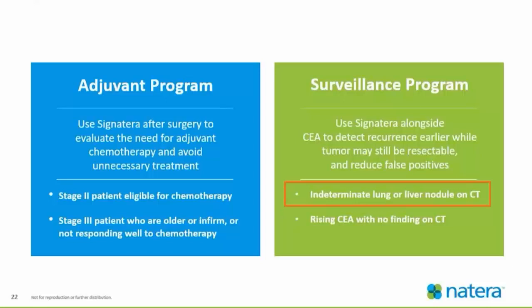Moving on to the surveillance program: the surveillance program can certainly be useful when we're following these patients, checking CEAs, and we see these indeterminate lung or liver nodules. Or if we also see a rising CEA with no finding on a CT. The next case study sheds light on when a surveillance program Signatera use will be helpful.